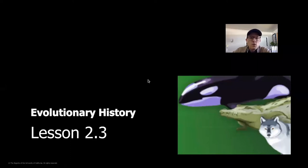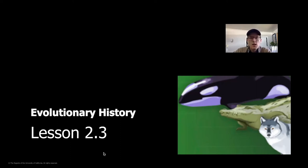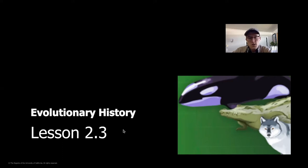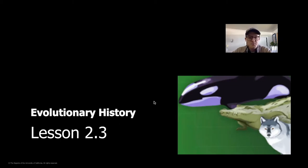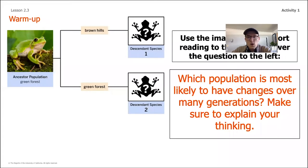Hey everyone, welcome back to science. We are going to continue our chapter two lessons today, moving on to lesson 2.3. We're actually going to be going back and doing a second read, zooming in on a couple of pieces from the article we read about last time. That article covered three different species: the Galápagos tortoise, the polar bears, and some flightless ducks. During our last lesson we read about the polar bears, and today we're going to zoom in on the Galápagos tortoise.